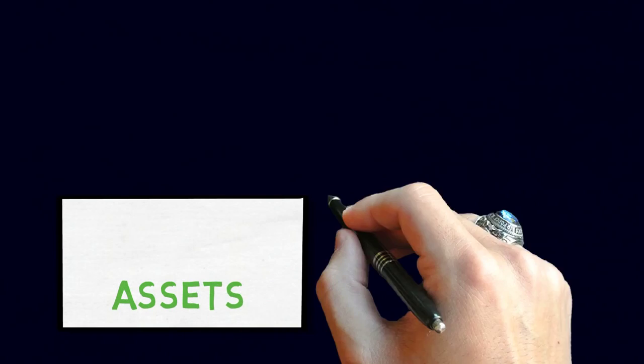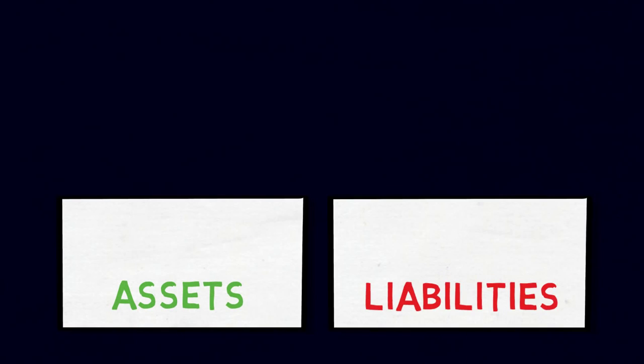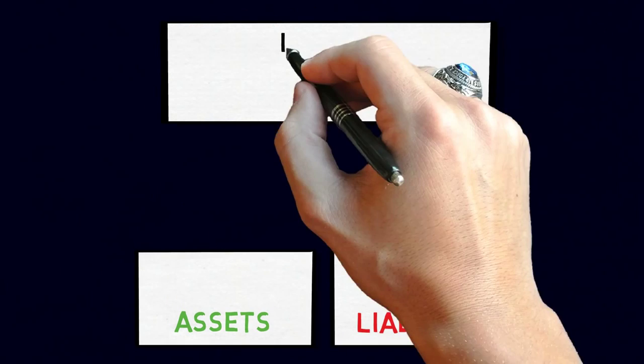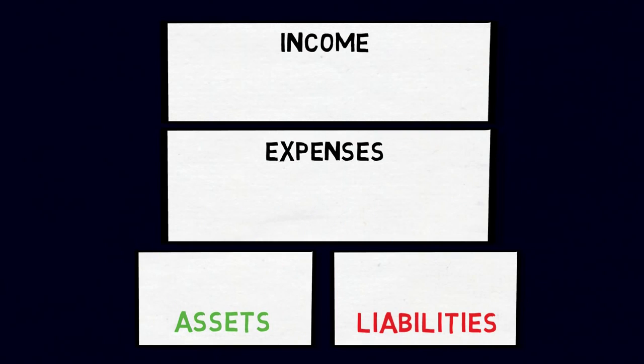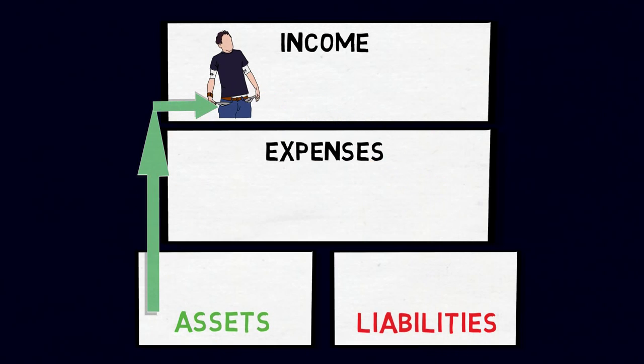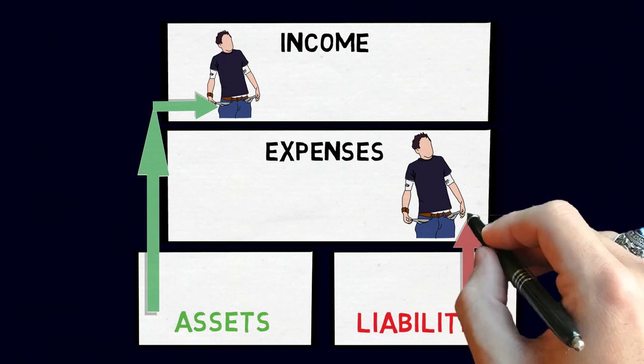You have to know these two words: assets and liabilities. Forget what you might have learned in your accounting classes, we are going to define them in very simple terms. An asset is anything that puts money in your pocket. A liability is anything that takes money from your pocket.